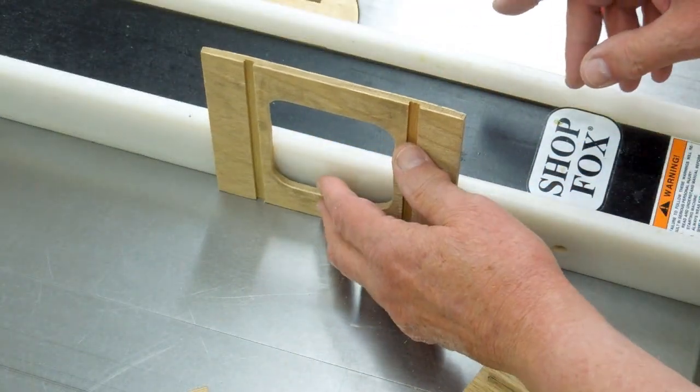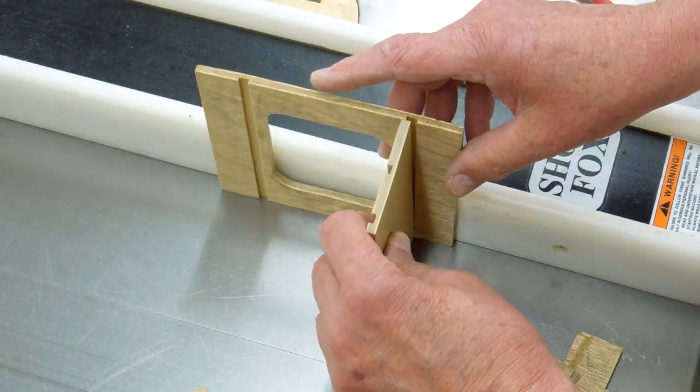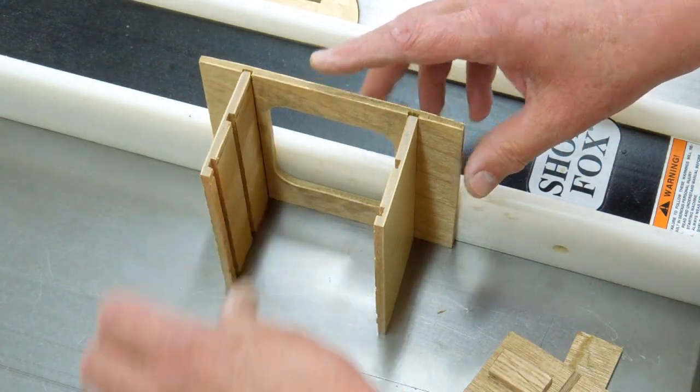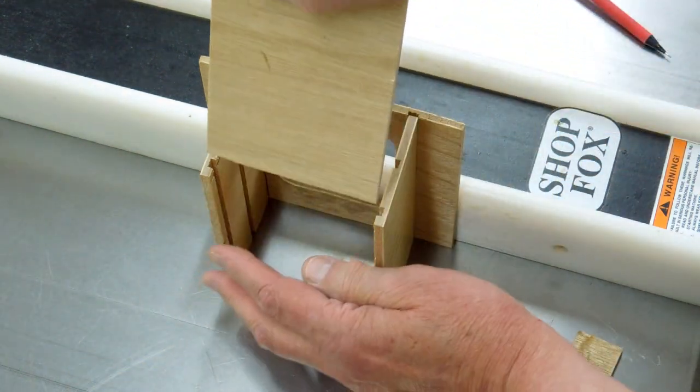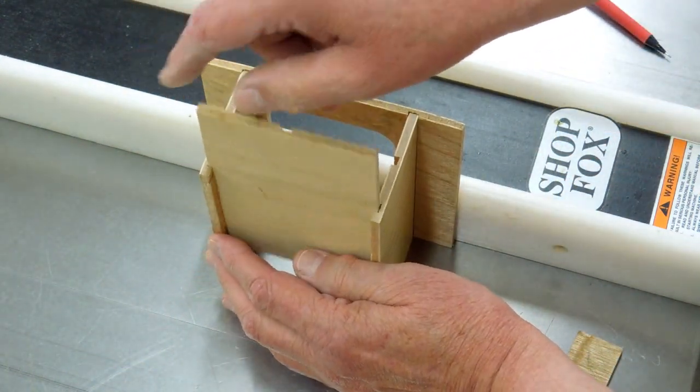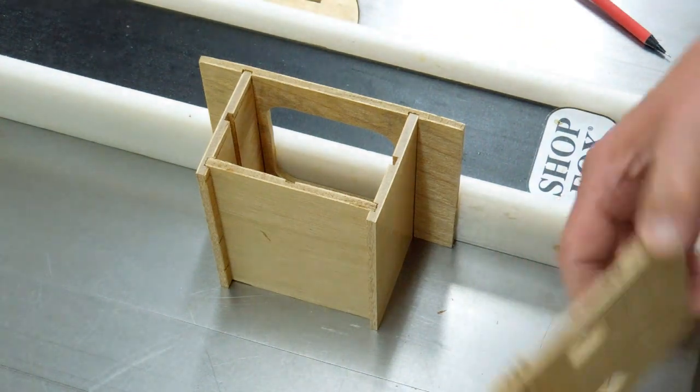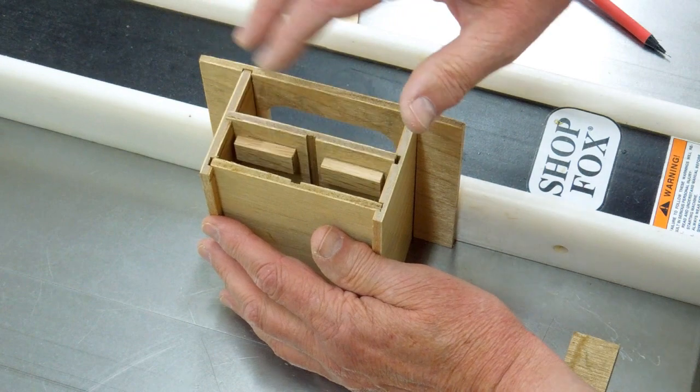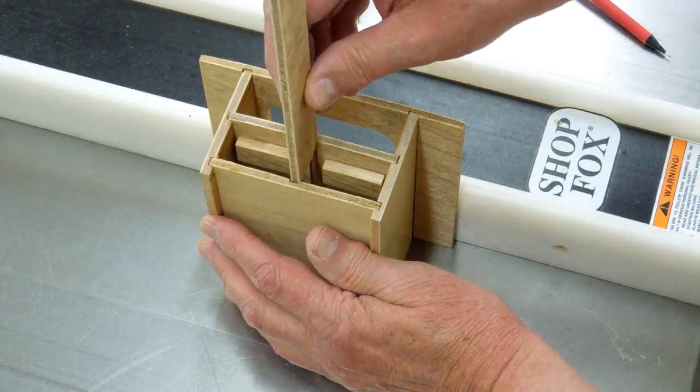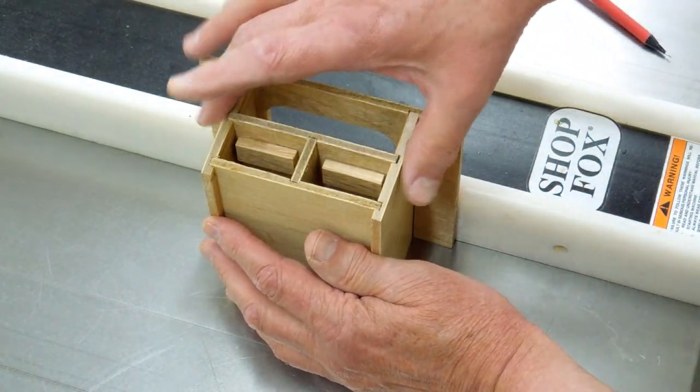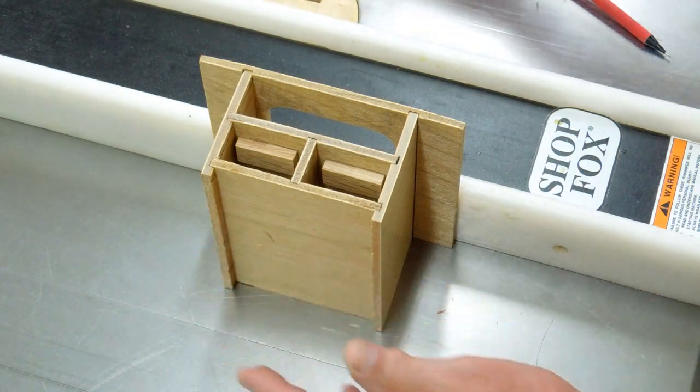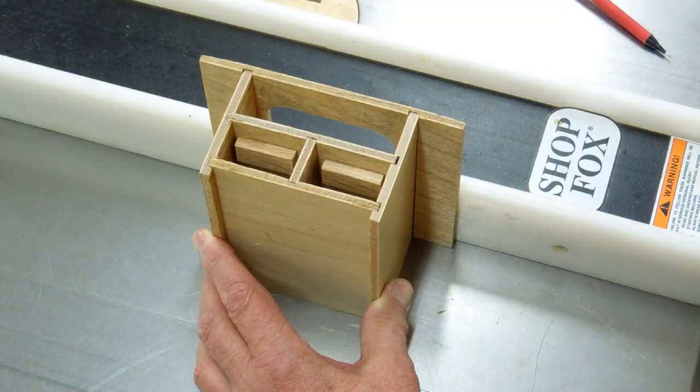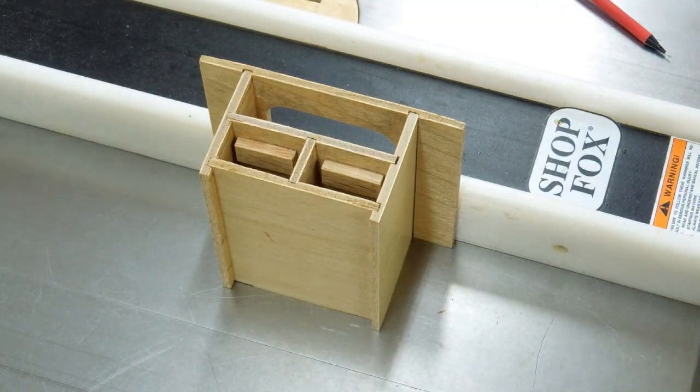Butt this up against the fence, put some glue in the slots, top piece in, valve assembly in, put that on there, check it for square, couple of clamps, let it dry.